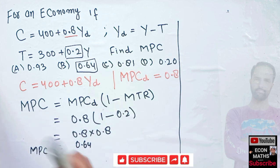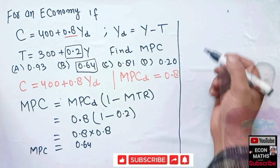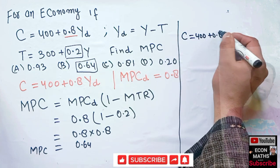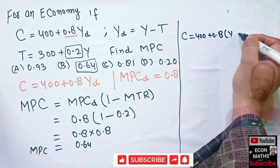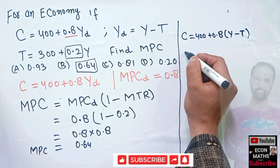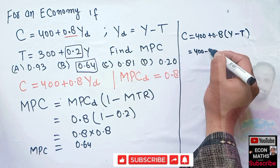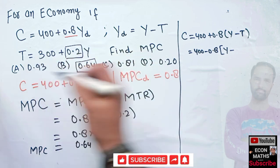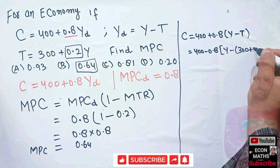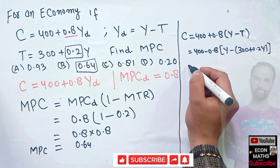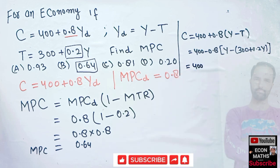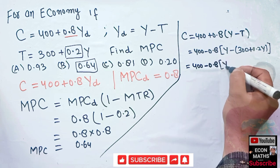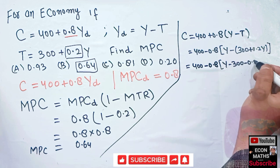You can also derive it if you want. The consumption function is 400 plus 0.8 Y subscript D. In place of Y subscript D, we can write Y minus T. So we have 400 plus 0.8 times (Y minus T). Now Y minus T is given by 300 plus 0.2 Y, so we substitute that in.